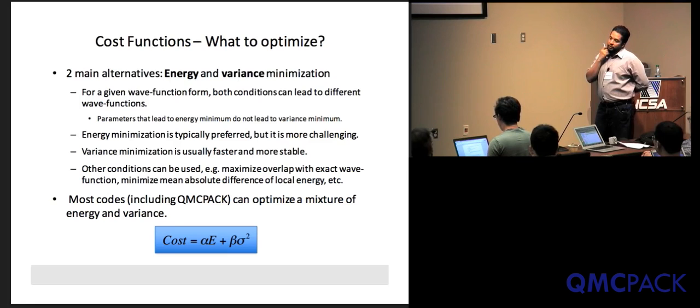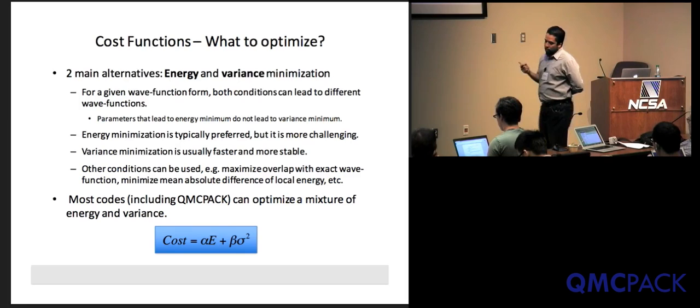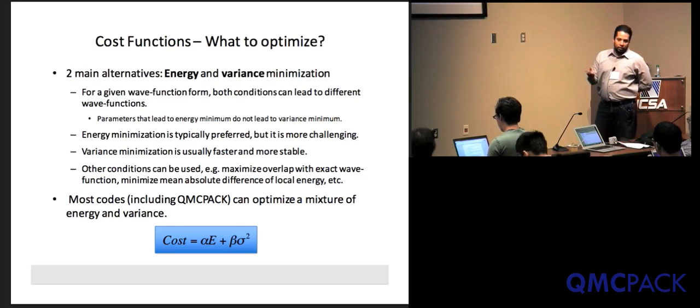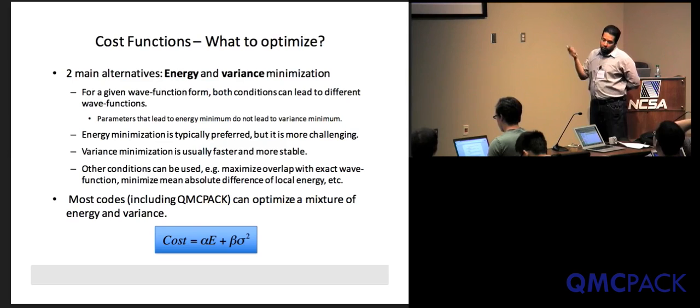Variance minimization is usually more stable, but it's typically not what you want to do. If you want to minimize the energy, it requires more stochastic sampling because noise influences energy minimization a bit more than variance minimization. But in the code, you can do either one — it's up to you.